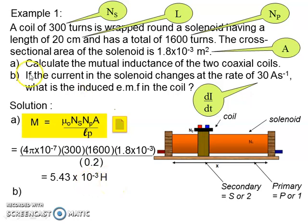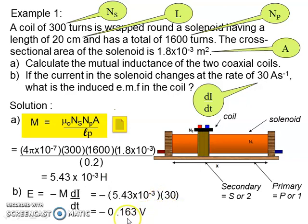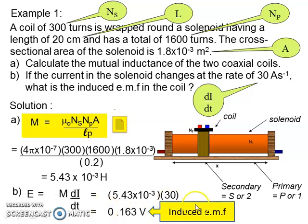For part B, the current in the solenoid changes at a rate of 30 A/s. To find the induced EMF in the coil, we use E = −M·di/dt. Substituting di/dt = 30 A/s and the mutual inductance from part A, we get the answer 0.163 V. Since it is already understood that the induced current direction is opposite to the primary current, we take the magnitude: 0.163 V.